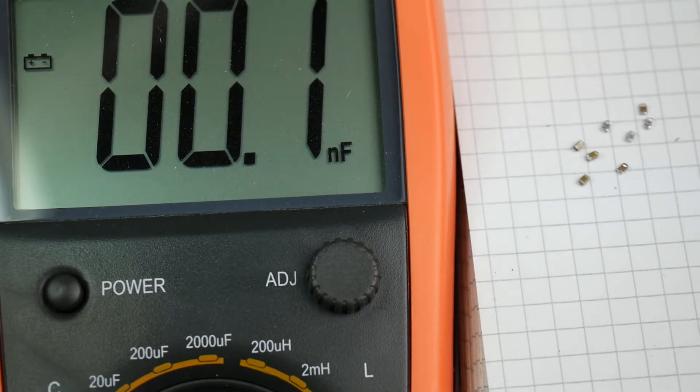So, having desoldered your fine surface mount parts, you may ask, John, how do you know what value they are? Because they're not marked.